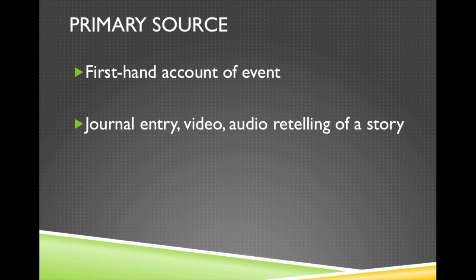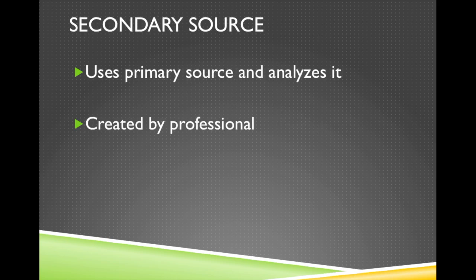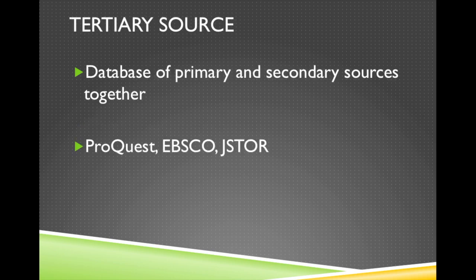A primary source could be a journal entry, an audio retelling of a story, or even a video. A secondary source is one that uses the primary source and analyzes it. It's usually created by someone with professional experience in the source material — basically, someone who works directly with the primary source. You might also hear the term tertiary source, which refers to a database of primary and secondary sources together, like what you might find in the Highline library catalog.